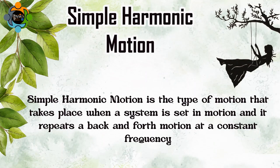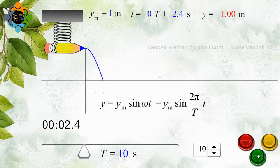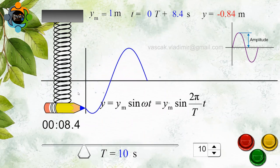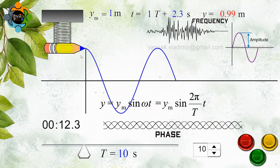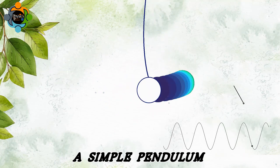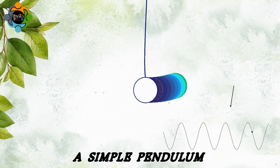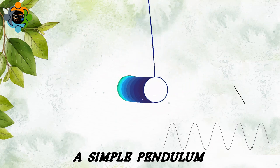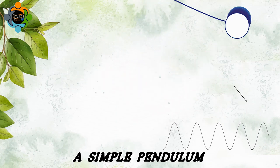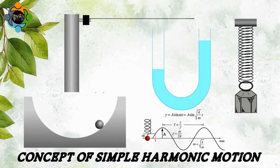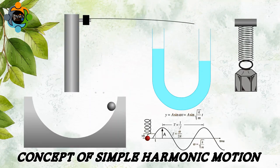So let's start with: what is simple harmonic motion? Simple harmonic motion is the type of motion that takes place when a system is set in motion and it repeats a back-and-forth motion at a constant frequency. The motion is always sinusoidal in nature — it has an amplitude, frequency, and a phase. An example of simple harmonic motion is the motion of a pendulum, where the oscillation follows a sinusoidal arc, the time period of which is defined by the length of the pendulum.